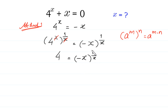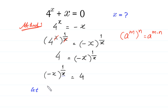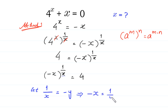Now, we move negative x to the power 1 over x to the left side and 4 to the right side: negative x to the power 1 over x is equal to 4. Because here we have negative x, we suppose that 1 over x is equal to negative y. So x is equal to negative 1 over y.